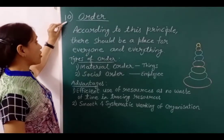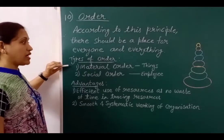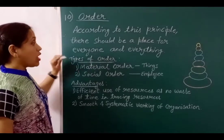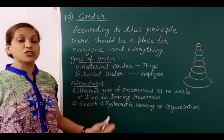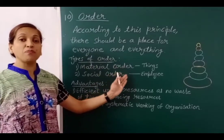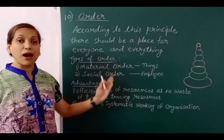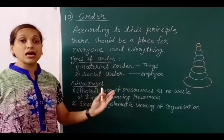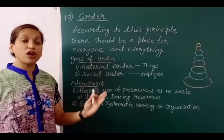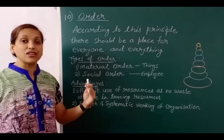The tenth principle is Order. According to this principle, there should be a place for everyone and everything. There are two types of order: material order, which refers to physical things, and social order, which refers to employees. Material order includes raw material, finished goods, machines, computers, sitting arrangements, and files — all these things should be kept at their fixed place so that we can easily find them when needed. For example, in any departmental store or supermarket, there are separate sections for each category of product, with shelves where products are arranged in a very systematic way, maximizing stock and improving presentation.